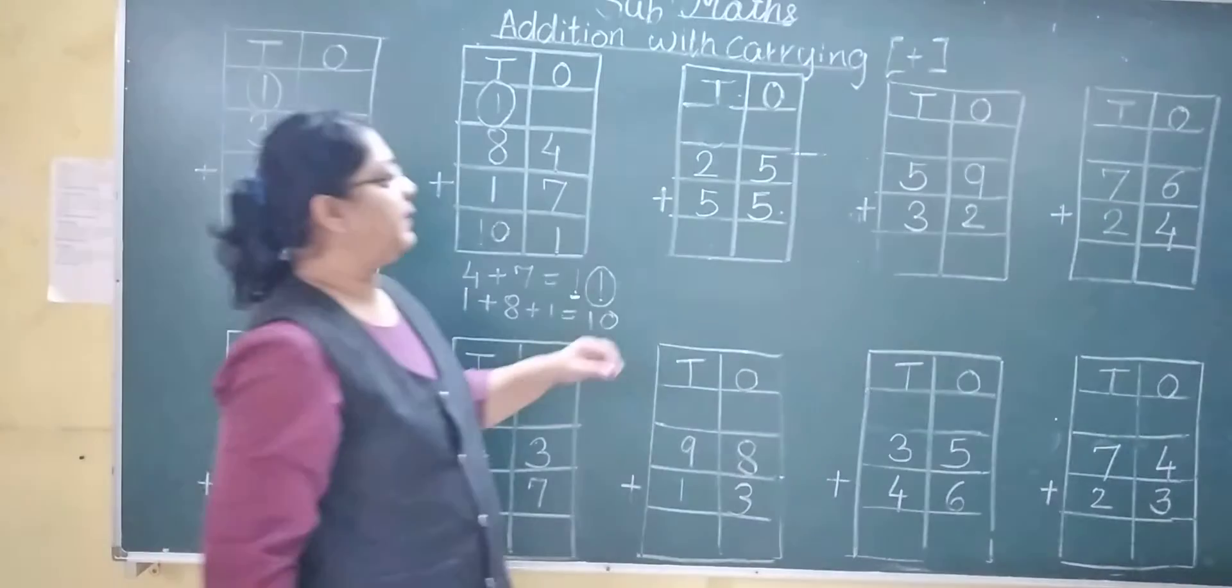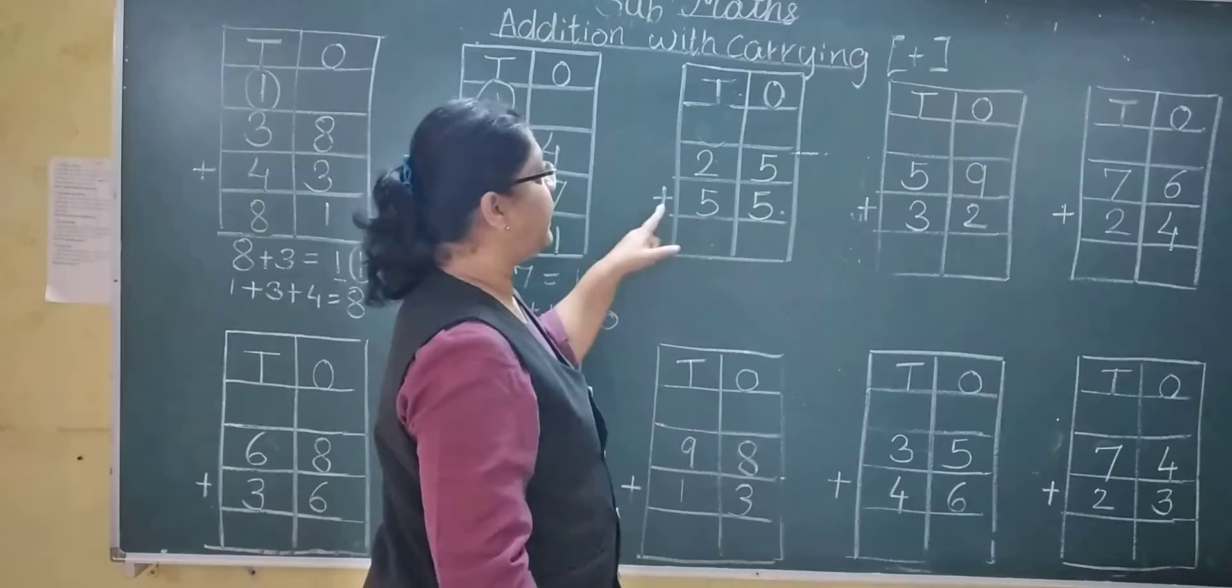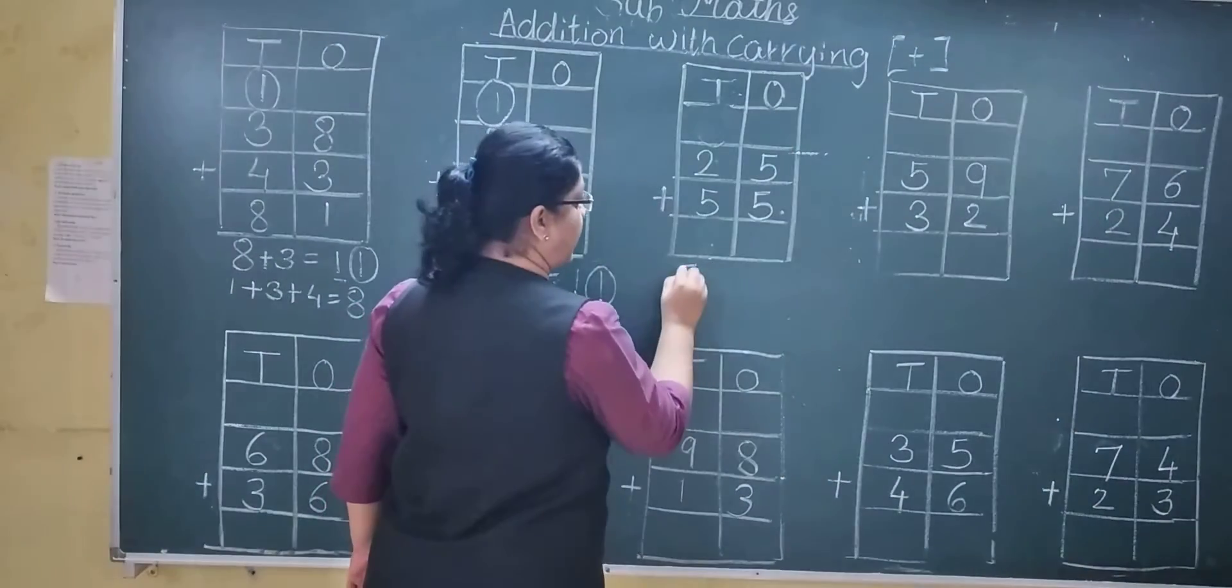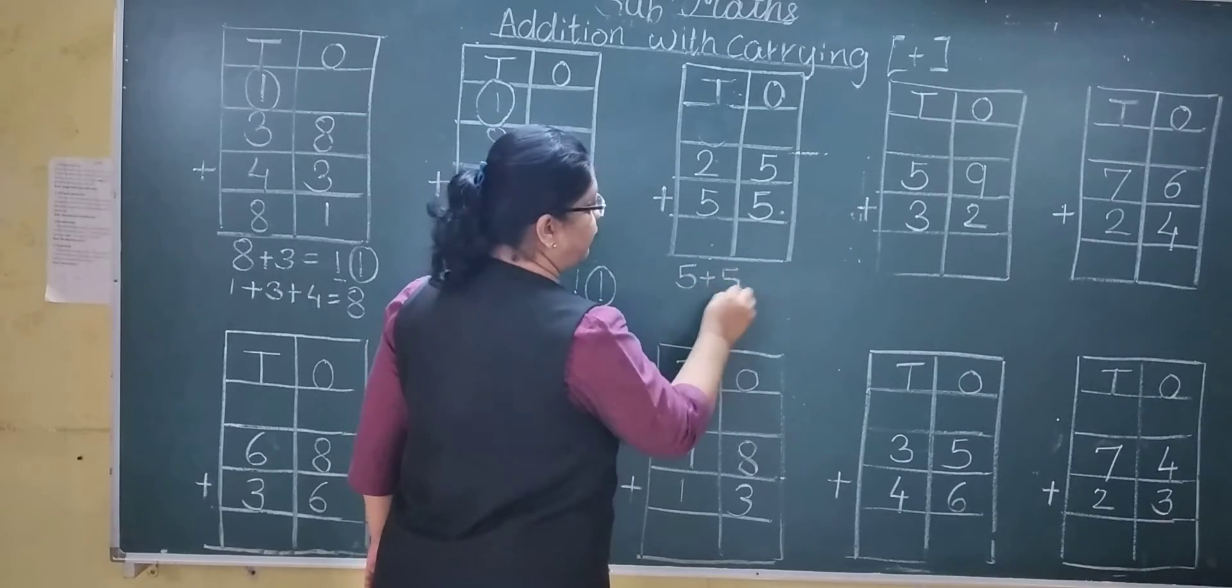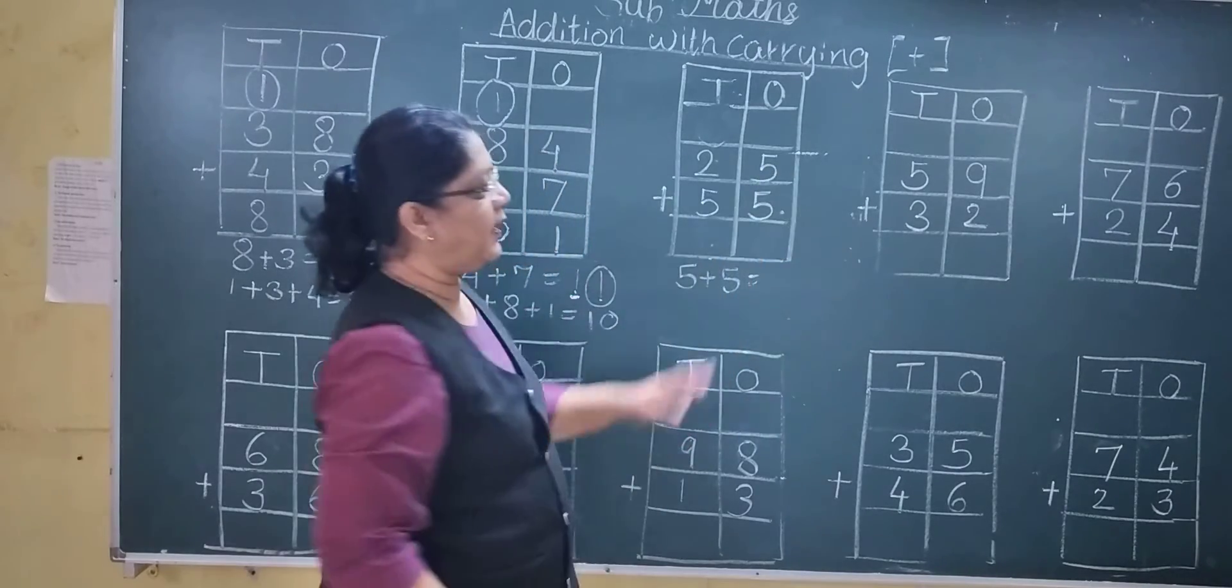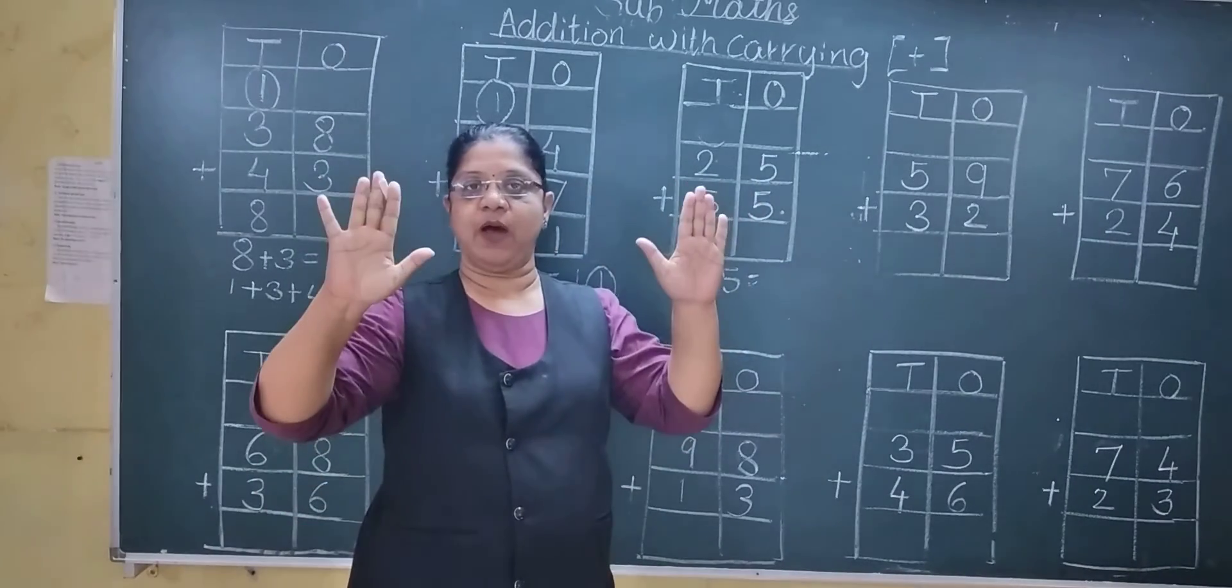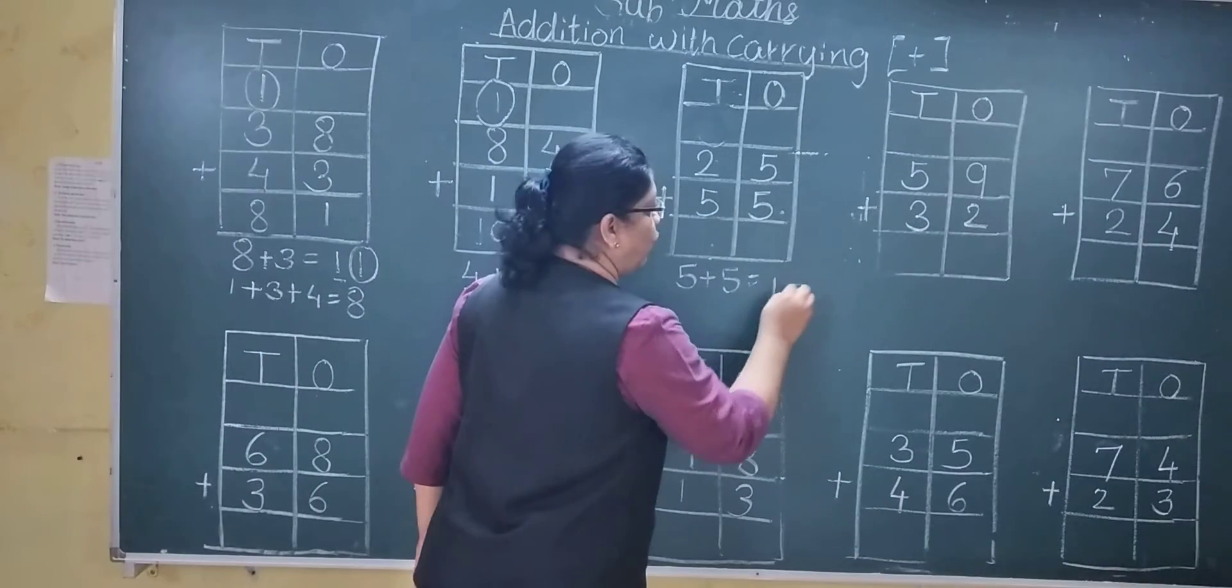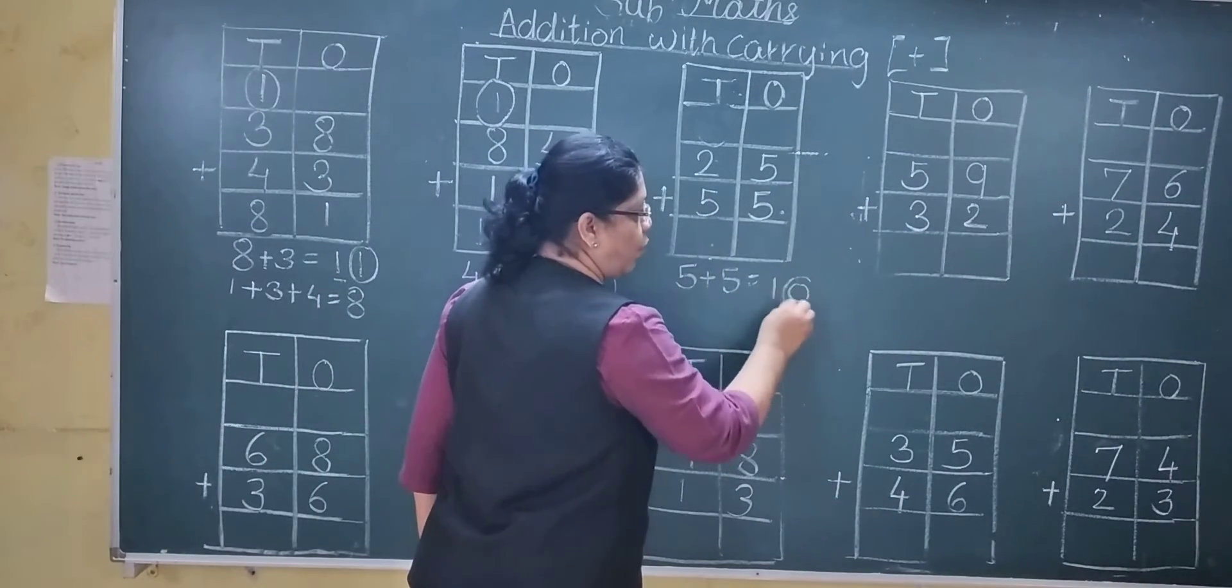One more example. See 24 plus 54. Start from ones. 4 plus 4. See 4 plus 4. 1 ten and 0 ones.